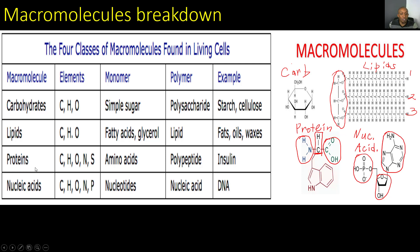Moving on to proteins: they contain carbon, hydrogen, oxygen, nitrogen, and sometimes sulfur. The monomer is amino acids, and the polymer is polypeptides. An example of proteins is enzymes. Here's that protein structure — the amino acid group joined by a side chain, and here's the carboxyl group.